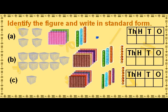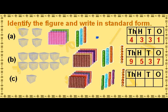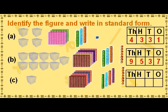Identify the figure and write in standard form. The standard form represented by the figures is 4331. The standard form represented by the figures is 9537. The standard form represented by the figures is 1547.